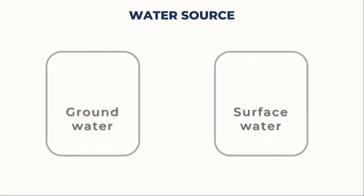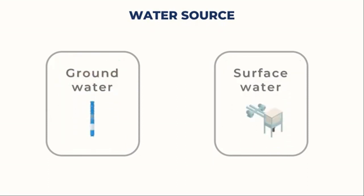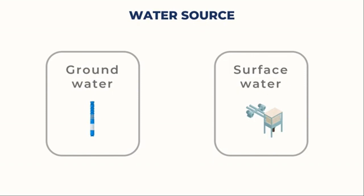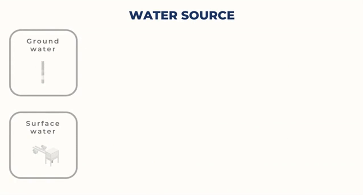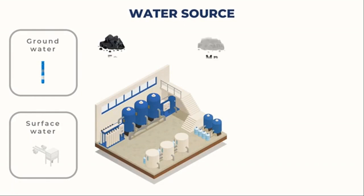Here are two illustrations of intake structures. Please leave a comment below if you'd like me to discuss these structures in an upcoming video. The removal of pollutants such as iron and manganese that groundwater contains is one of the most frequent issues water plants face.